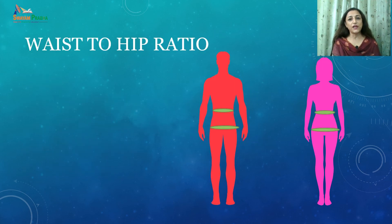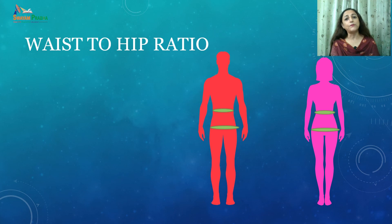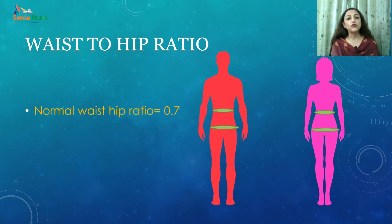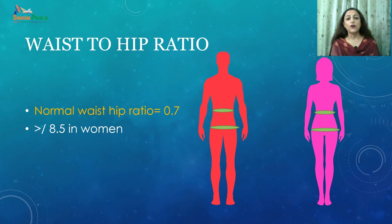Waist-to-hip ratio is another reliable index of adiposity. The predominant distribution of fat — whether in the upper or lower body — determines the disease pattern as well. Abdominal obesity may not go hand in hand with overall overweight. The normal waist-to-hip ratio should be 0.7. If it is more than 0.85 in women or more than 1 in males, the person is considered more prone to diseases associated with overweight and obesity.